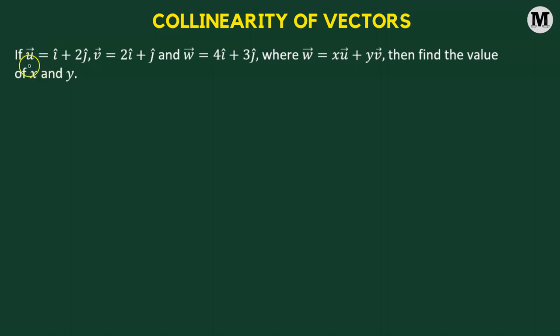In this problem, we are provided with three vectors: u vector, v vector, and w vector. There is a relationship given by w vector equals the linear combination of u vector and v vector. Our goal will be to determine the value of x and y. Let us begin.